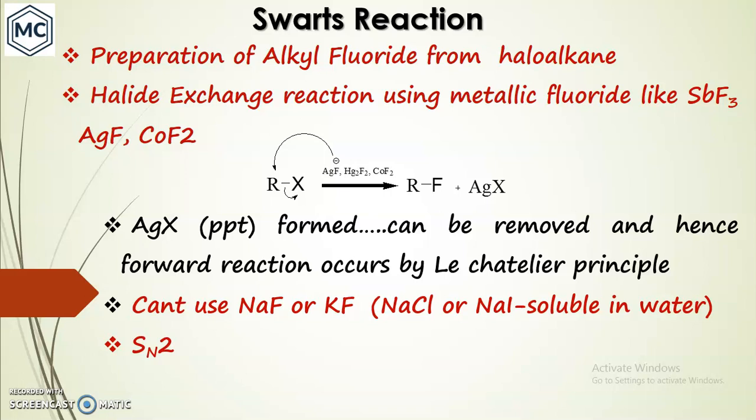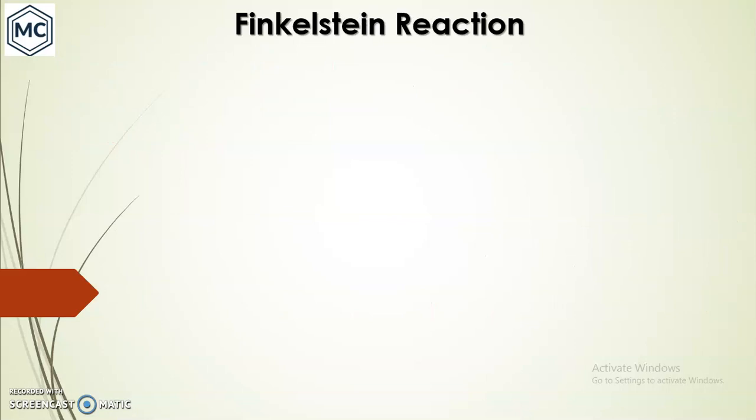In this reaction you cannot use sodium fluoride or potassium chloride because the byproduct would be sodium chloride or sodium iodide, which are soluble in water. This reaction is an SN2 reaction - substitution nucleophilic bimolecular. An example of the Swartz reaction: isopropyl chloride can be converted into the corresponding fluoride by using silver fluoride.